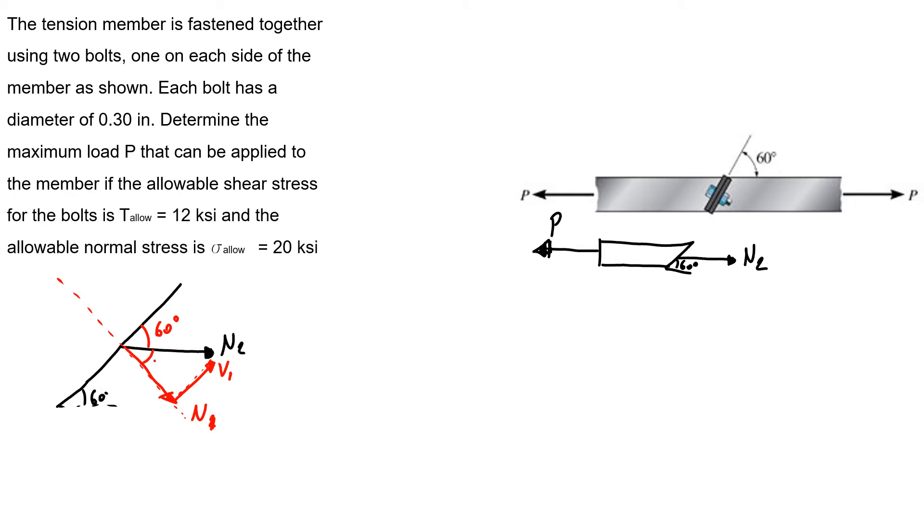Now we know the sum of the forces equals 0. So N2 minus P equals 0, N2 equals P.